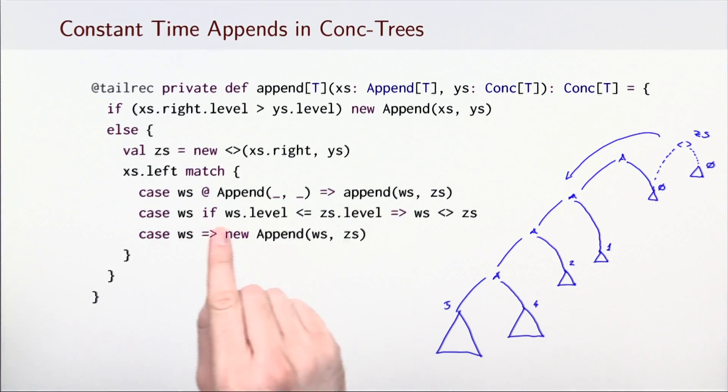The remaining two cases handle the scenario in which the left subtree is not Append, which happens if we manage to push the tree all the way to the bottom of this append list.